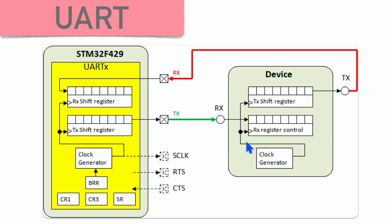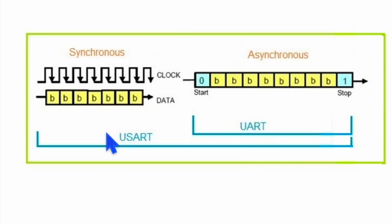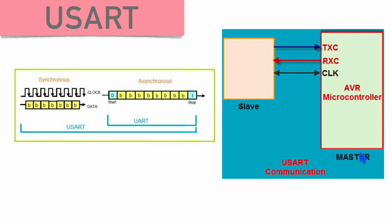Since UART is not a synchronous communication protocol, it doesn't share a common clock. Both devices run with their own internal clocks. But the baud rate for both devices must be the same. If the first device runs at 9600 baud rate, the other device also has to run at 9600 baud rate for data to be received correctly. In synchronous communication, a common clock is shared, similar to SPI, where the clock line is controlled by the master.